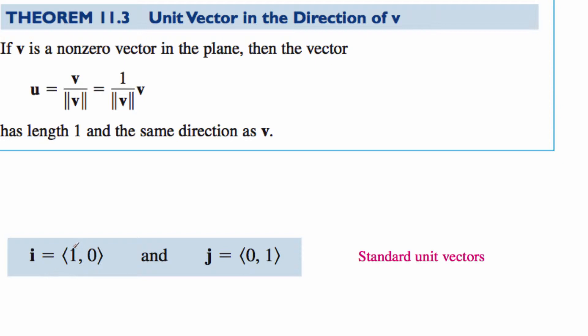But i is a unit vector that is one unit in the x direction and zero in the y, while j is zero units in the x and one in the y.